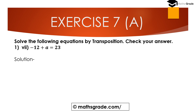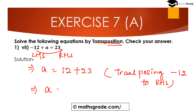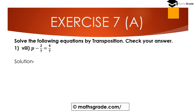Question number seven: minus 12 plus a equal to 23. Here minus 12 plus a is on the left-hand side and 23 is on the right-hand side. Transposing minus 12 to the right-hand side, minus changes to plus. So a equals 23 plus 12, which is 35. The solution is a equal to 35.